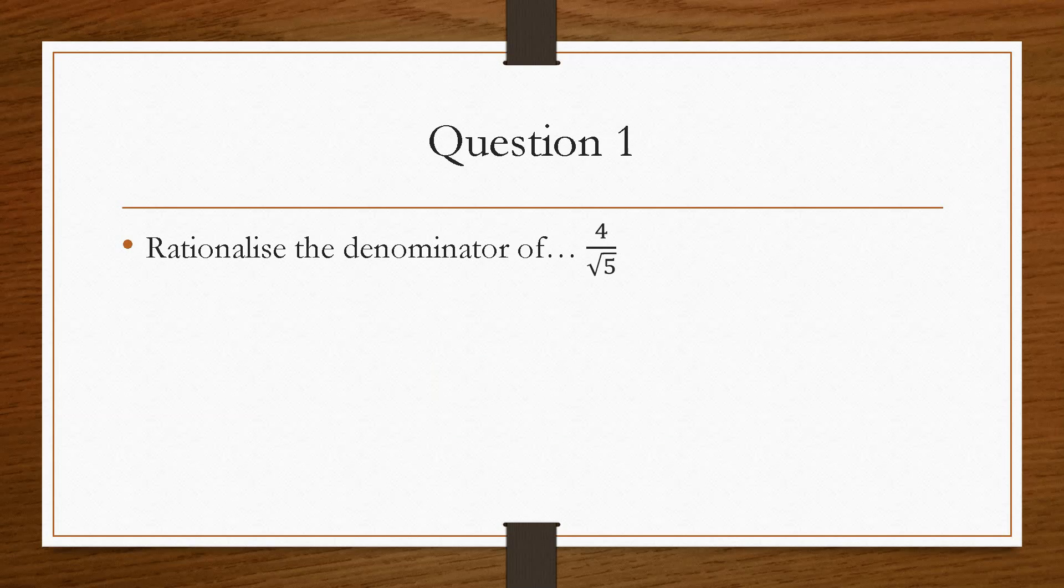So if we take a look at question number one, question number one asks us to rationalise the denominator of 4 over root 5. So as it stands just now, this has an irrational denominator, and we want to rationalise it. So what we've got to do is multiply,